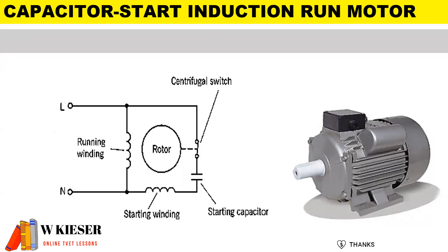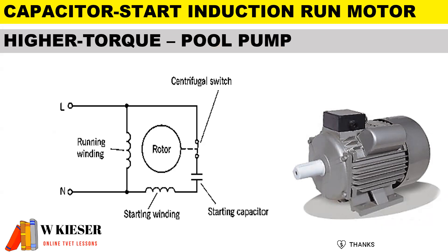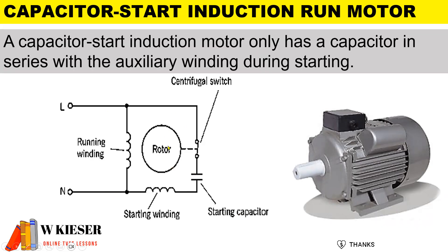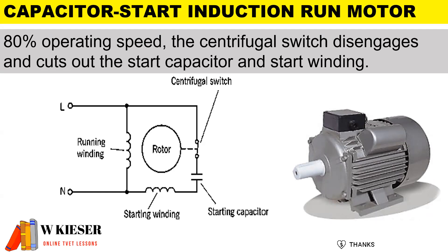In this illustration, we have a capacitor start induction run motor. This motor is mainly used for swimming pool pumps and has slightly higher torque. Looking at the circuit diagram, you'll notice a start capacitor, a start winding, a run winding, a centrifugal switch, and a rotor. In terms of operation, the capacitor is in series with the auxiliary winding only during starting. At around 80% operating speed, the centrifugal switch disengages and cuts out the start capacitor and start winding.